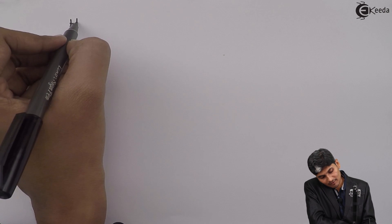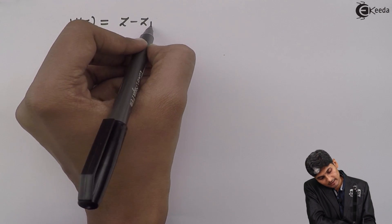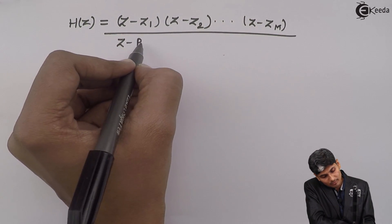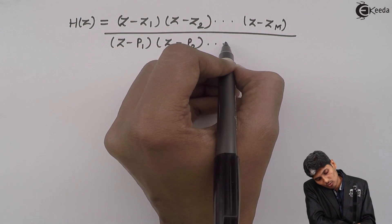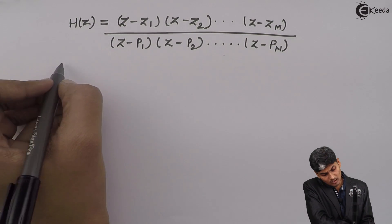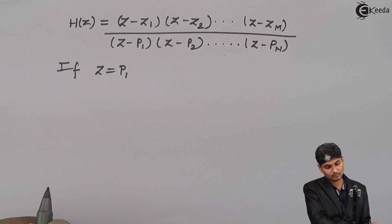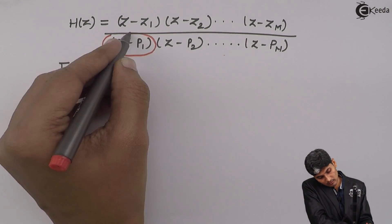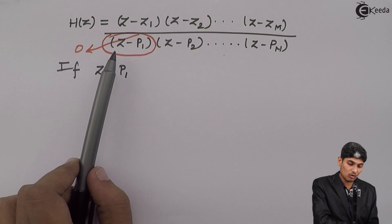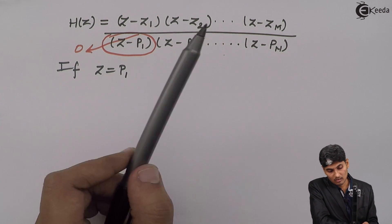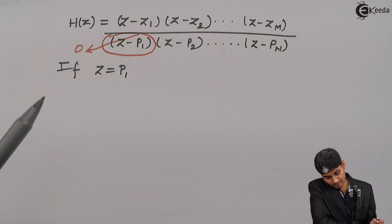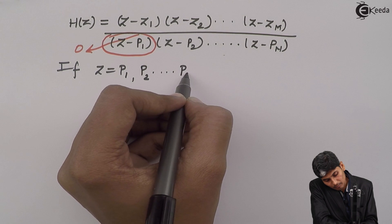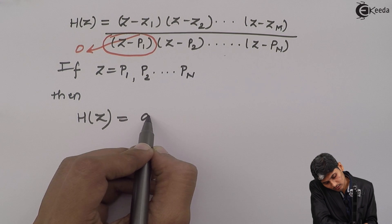Similarly, if we have H(z) equals (z - z1)(z - z2)...(z - zm) divided by (z - p1)(z - p2)...(z - pn), and if I put z equal to p1, then the denominator term will go to 0. Now, 0 multiplied by any number results into 0, and any number divided by 0 results into infinity. So if I put z equal to p1, p2, and so on till pn, then H(z) will turn out to infinity.